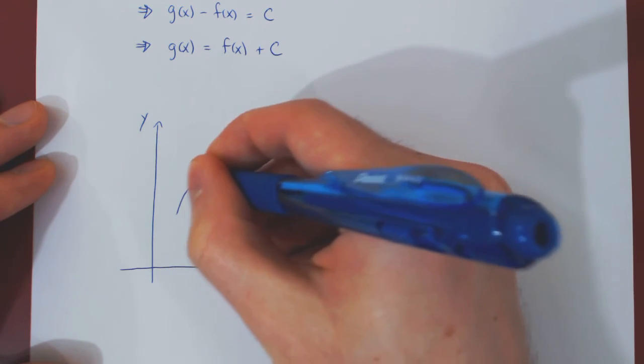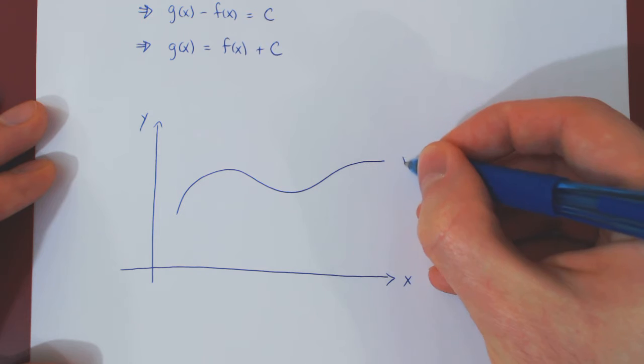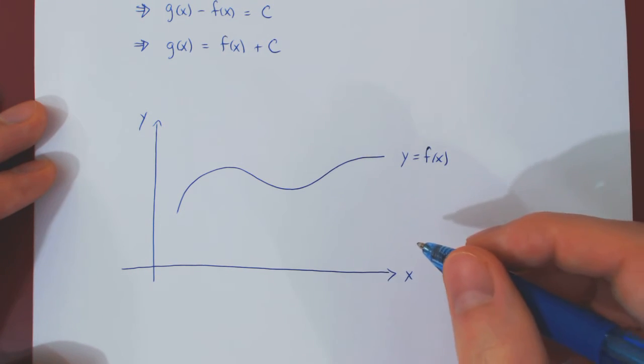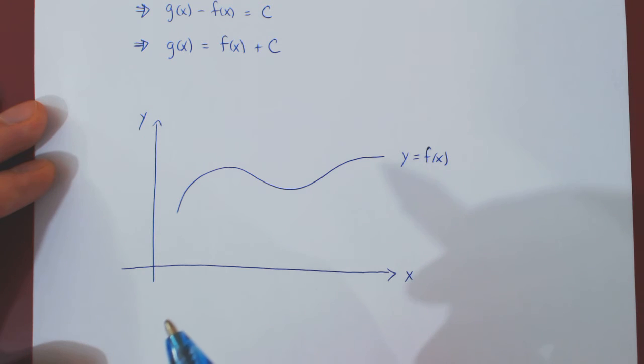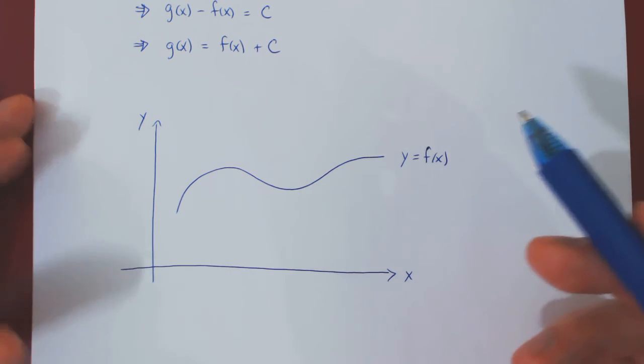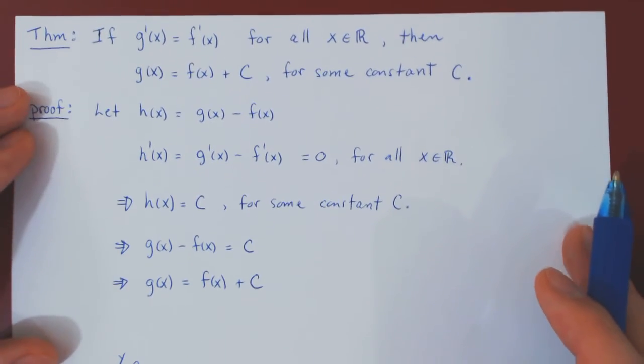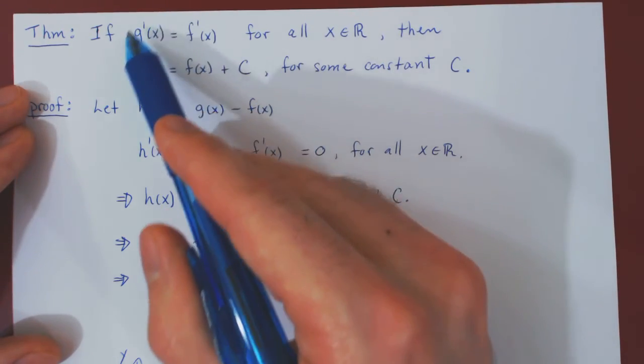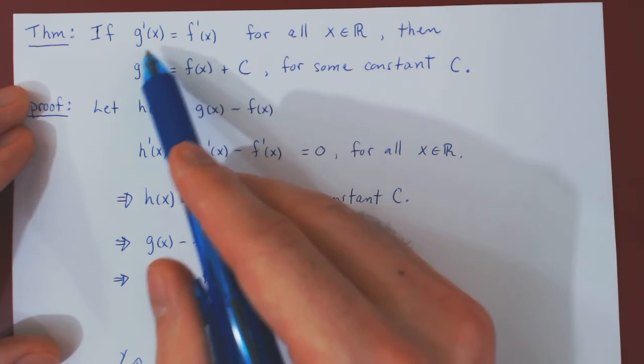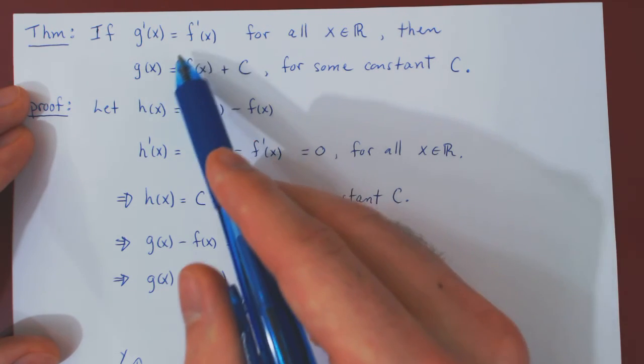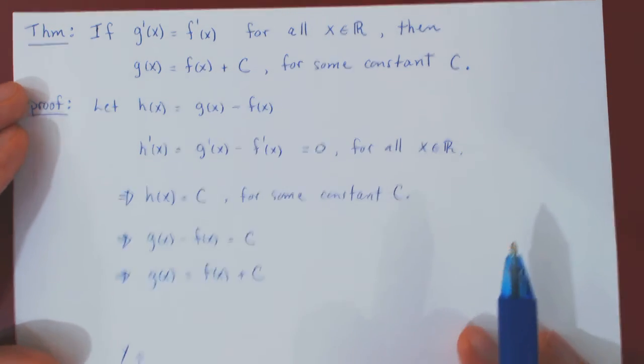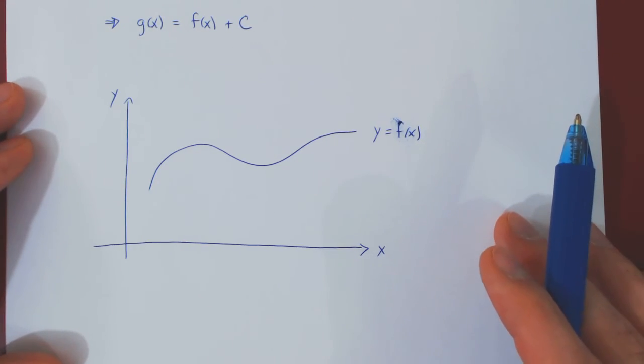So imagine we have a differentiable function f of x. And you ask, well, how will other functions with the same derivative as f everywhere look like? Well, we have our result. If some other function has the same derivative as f, that function must be the original function plus some constant, therefore, a vertical translation of the original function.